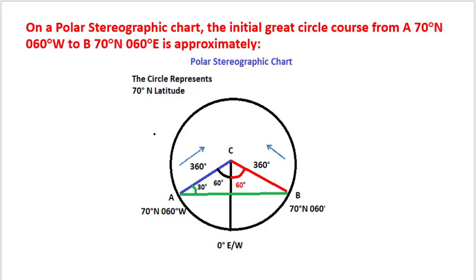This circle represents 70 degree north latitude in a polar stereographic projection. Point C represents north pole. Point A, as given in the question, is the point which is on 70 degree north latitude and is 60 degrees west.